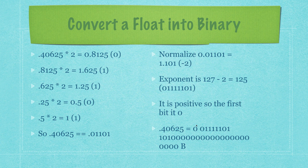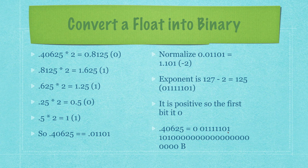To convert to IEEE binary format, figure out how many decimal places you need to move the 1 into the leading 1 position — in this case 2. Subtract 2 from 127 to get 125, which gives you the exponent binary value. Since this is a positive number, the sign bit is 0. You then place the exponent bits followed by the fractional binary number. That's how you convert a floating point decimal number into a binary float.